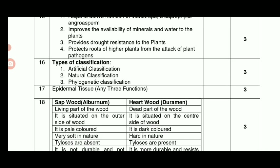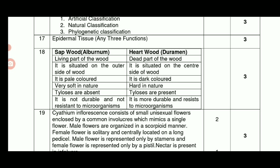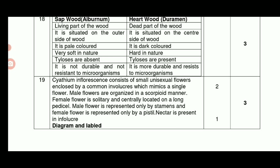Epidermal tissue — 3 marks. Difference between Sapwood and Heartwood: Alburnum is the living part of wood; Duramen is the dead part of wood. Definition is 2 marks. Diagram label is 1 mark. Total 3 marks.